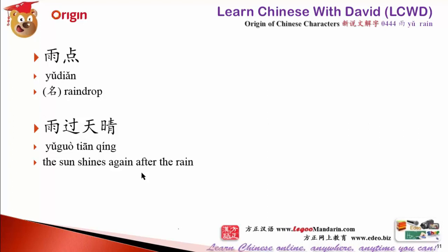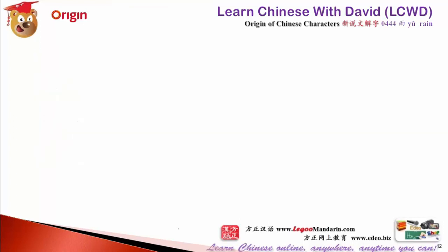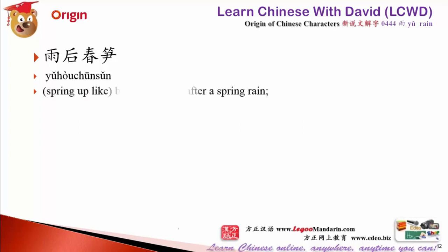雨过天晴 also means after some troubles, you come back to normal. 雨后春笋 — 笋 is bamboo shoot, the baby bamboo just grown out from the earth. After spring rain, bamboo grows very fast, so 雨后春笋 means something that suddenly comes out in large numbers after a period of growth.